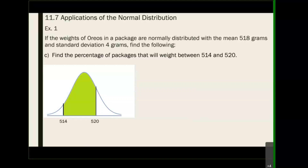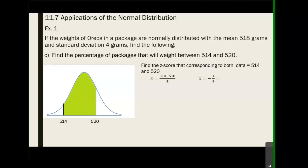We're looking for the area in between. If you remember from 11.6, to find the area in between, all we need to do is take the larger area minus the smaller area. But in 11.7, we cannot just go into the chart without converting to the z-score. So we have to convert both: find the z-score for 514 — that's (514 minus 518) divided by 4 — and find the z-score for 520 — that's (520 minus 518) divided by 4.